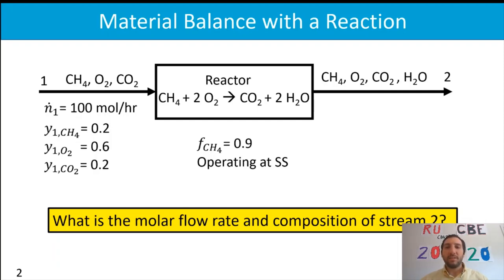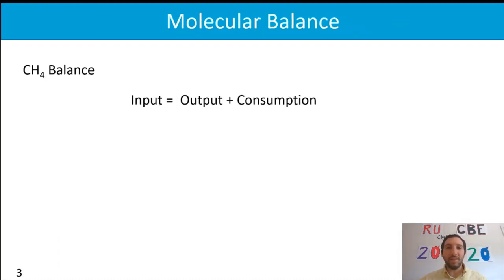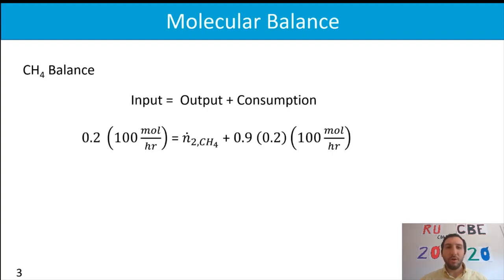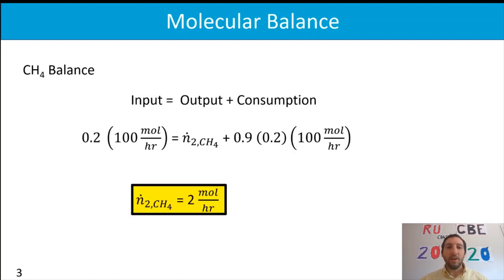To get us going for the atomic balance, we need to figure out how much methane is coming out based on our fractional conversion. For methane, we have input equals output plus consumption. We know the amount coming in and how much is consumed thanks to our fractional conversion, and we find that the molar flow rate of methane exiting the system is two moles per hour.